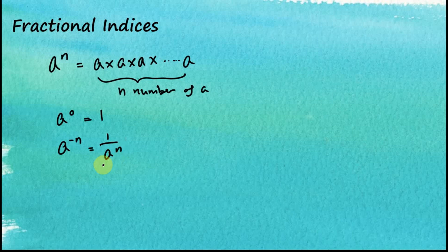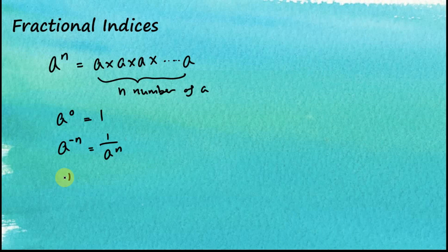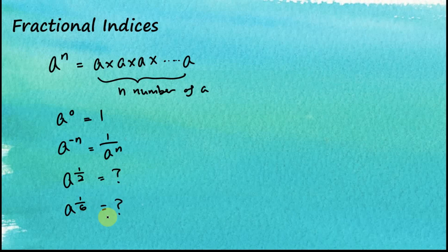Now we have another interesting question. So far we assumed that all the index numbers are integers — there are no fractions for the index numbers. So now we have another interesting question: what is the value for a fractional index number? For example, a to the power of 1 over 2, or a to the power of 1 over 6. How do we find the values of these fractional indexes?